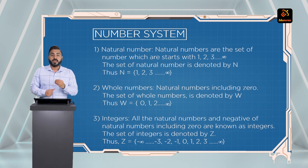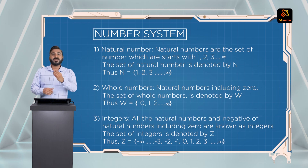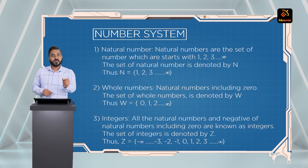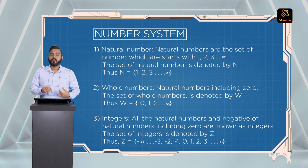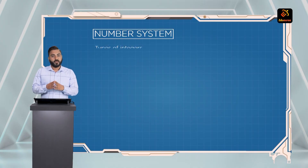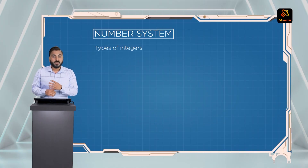We denote integers with Z. So Z is equal to {..., -3, -2, -1, 0, 1, 2, 3, ...} up to infinity. There are many types of integers, so let's check which ones.